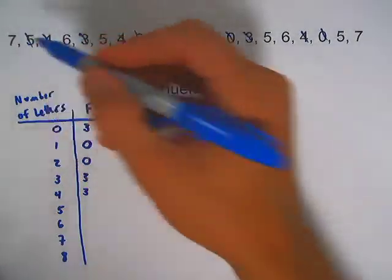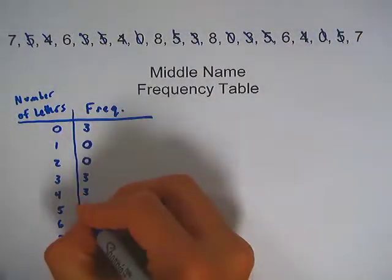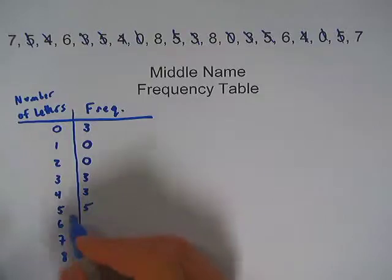5. This is a pretty common one I think. So 1, 2, 3, 4, 5. So 5 people had a middle name of 5 letters.